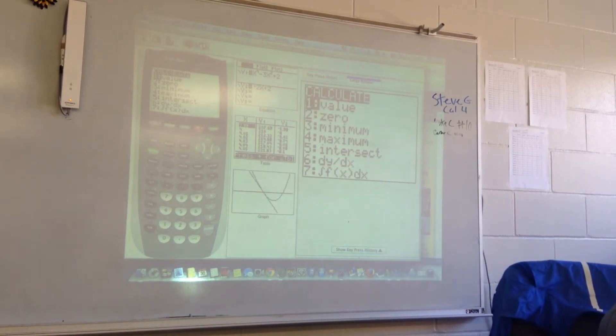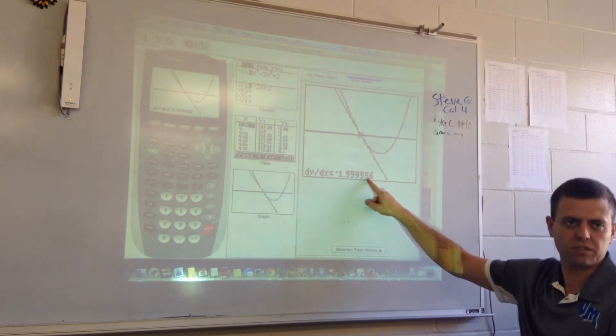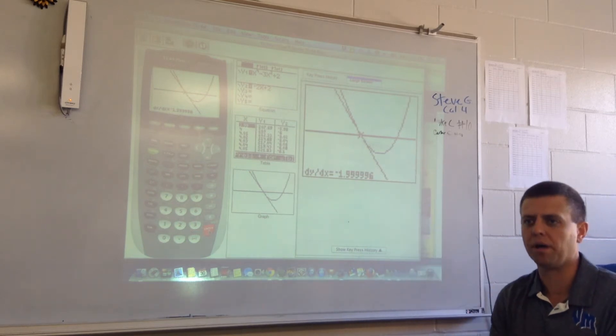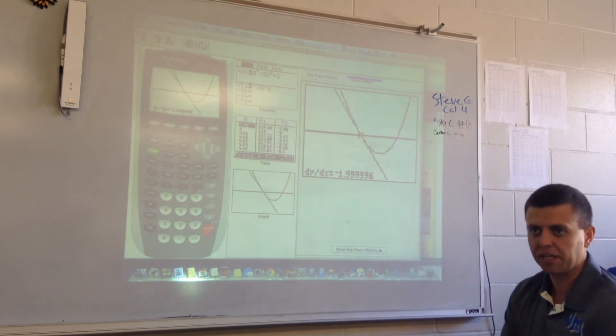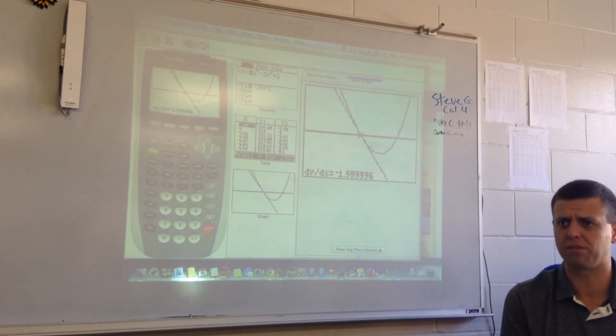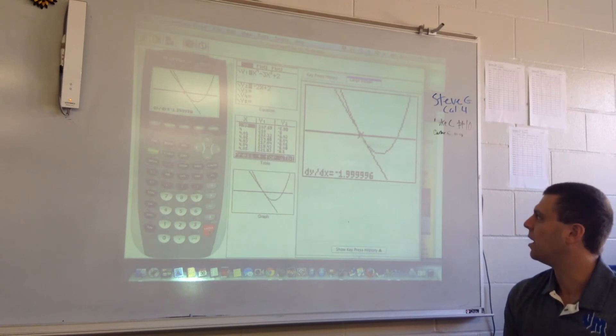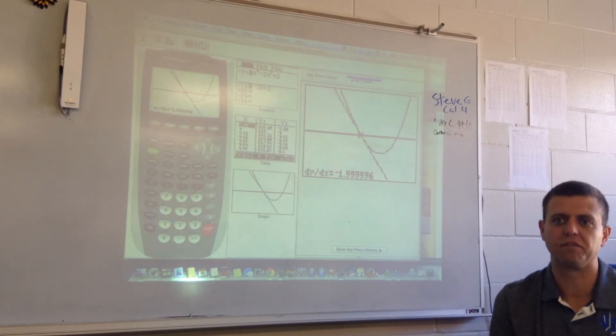Okay. If you select number six and then you hit one, because we want to know the derivative at x equals one, it will give us the slope of the tangent line at one. Notice the little bit of an issue with the programming. It's not exactly negative two. Okay. And that has to deal with how, basically, the language of the calculator is written. Or on mine, it's not quite negative two. Did anybody get negative two? I just got a decimal. Okay. But if you were to round that to the nearest tenth or hundredth or thousandth, you'd still get negative two as your rounded answer.